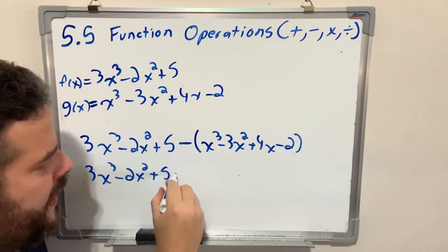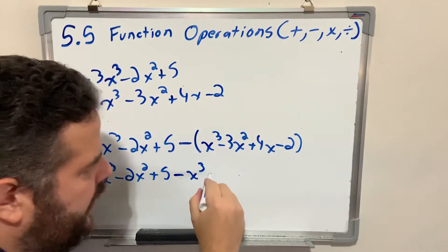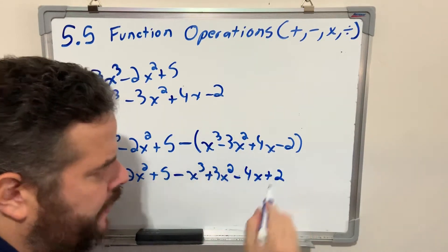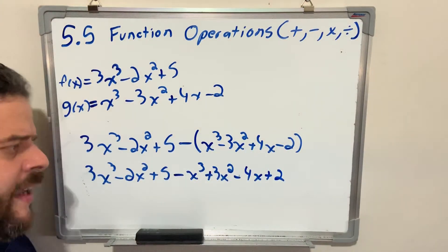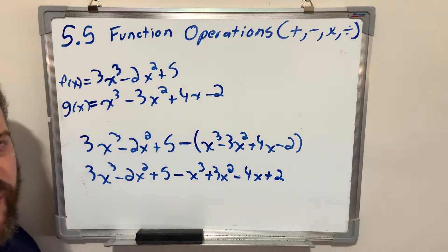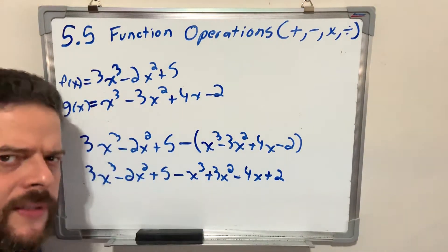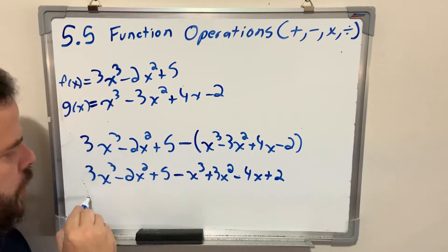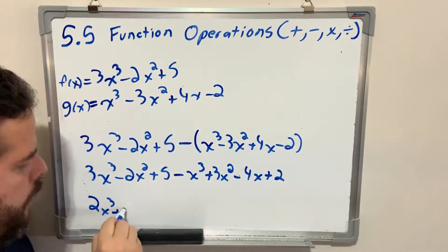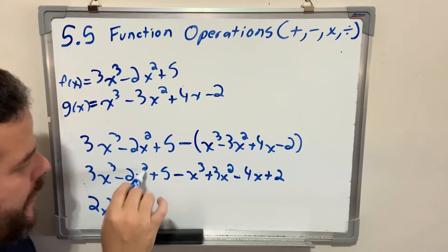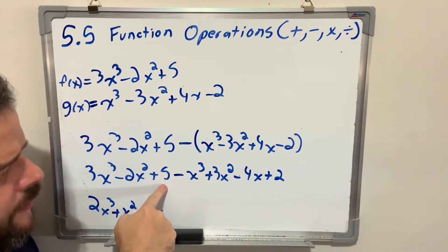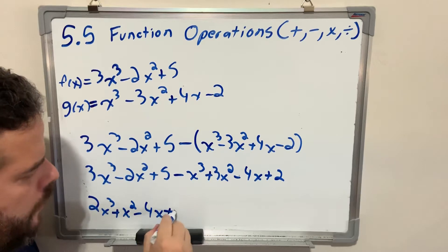Now I am going to distribute the negative along the entire polynomial. Positive times negative, negative. Negative times negative, positive. Negative times positive, negative. Negative times negative, positive. After you distribute the negative, combine all like terms. I always write them in standard form, from increasing degree to decreasing degree. 3x cubed minus x cubed, 2x cubed. Negative 2x squared plus 3x squared, plus x squared. Since I'm missing x on this side, I'm just going to write this one as is. Plus 5 plus 2 plus 7.